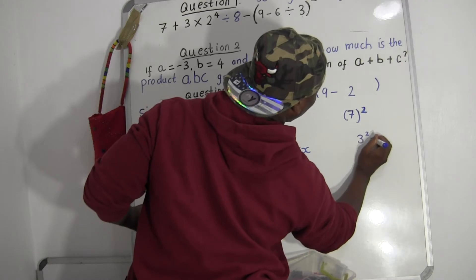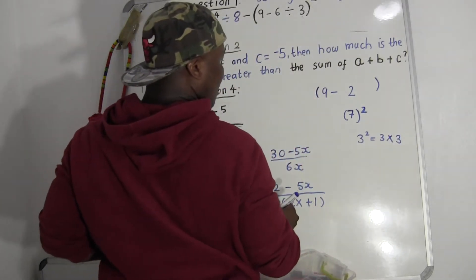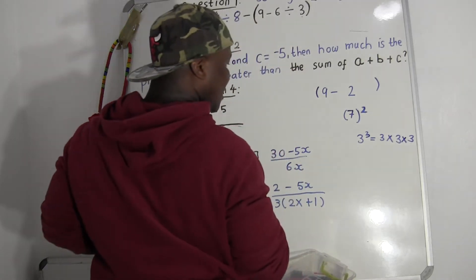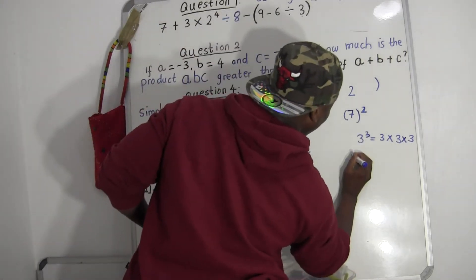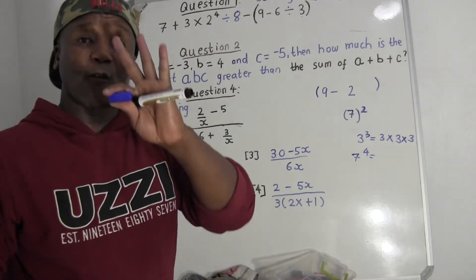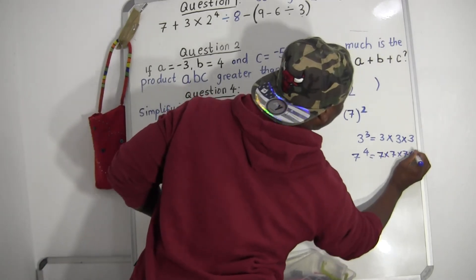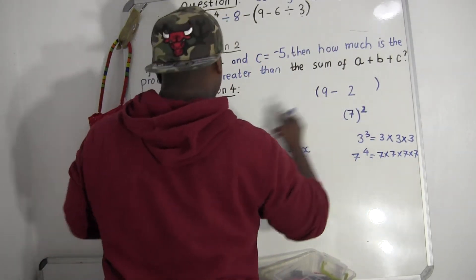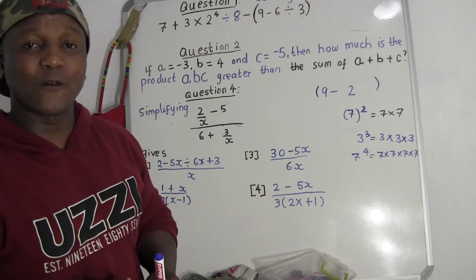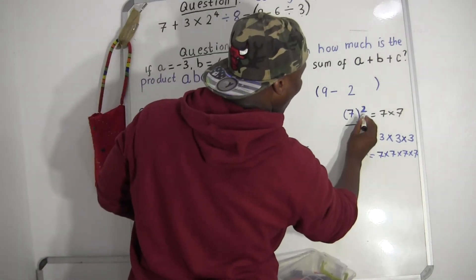For example, if somebody says three squared, it's three times three. If you have seven to the power of four, that means seven times seven times seven times seven — four times. For this case it's just seven squared, which means seven times seven equals forty-nine. So all of this expression with the square equals forty-nine.